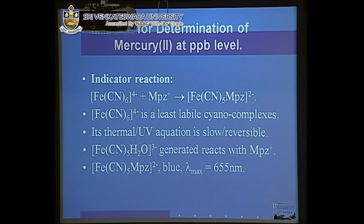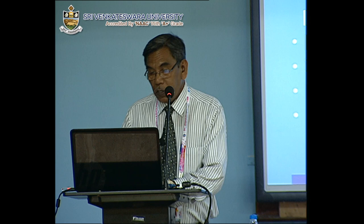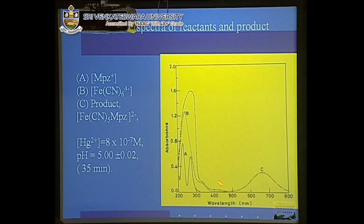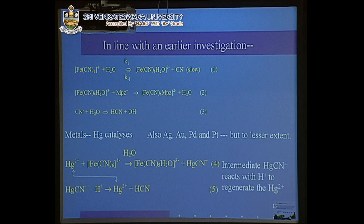However, thermal or aquation is a reversible process giving FeCN5-H2O, the aquopentacyanopyrazinium complex. On reaction with MPZ, it gives the FeCN5-MPZ complex, which is an intense blue-colored complex absorbing at 655 nanometers. This forms the basis for the analytical method. The UV-visible spectrum shows that the reactants do not absorb at 655 nm, so there is no interference from reactants. This makes it the best suited reaction for analytical application.